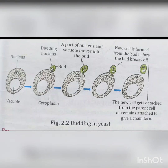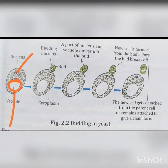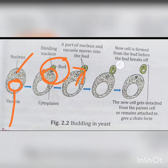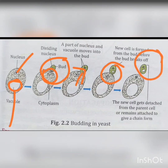As you can see in the figure, this is a cell of yeast in which a vacuole and a nucleus is present. The bud develops on the parent and the nucleus starts dividing. A part of the nucleus and vacuole moves into the bud. The new cell is formed from the bud before the bud breaks off. The new cell gets detached from the parent cell or remains attached to give a chain form.